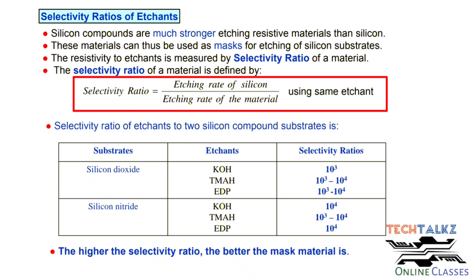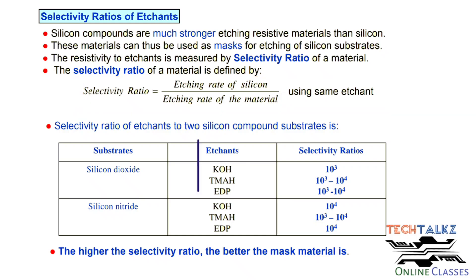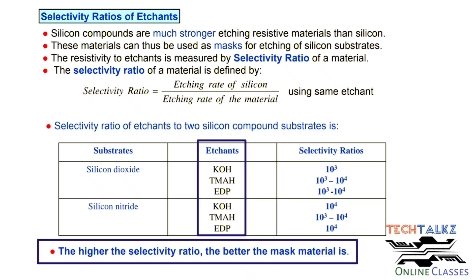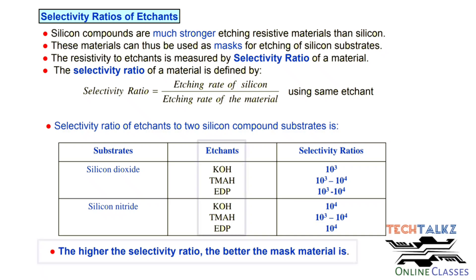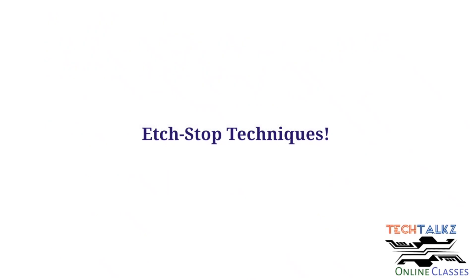The selectivity ratio is defined as the etching rate of silicon divided by the etching rate of the mask material, using the same etchant. Silicon dioxide and silicon nitride compounds have very low etching rates, making them effective mask layers. To obtain a 3D geometry of the correct design size, we must stop the etching process at the correct time — this is called the Etching Stop Mechanism, which is very important. Different types of etching stop mechanisms will be covered in the next class.